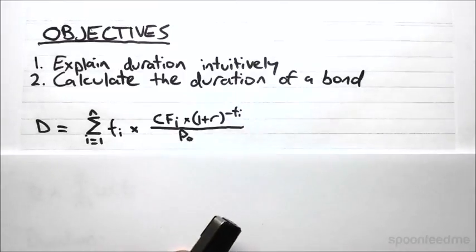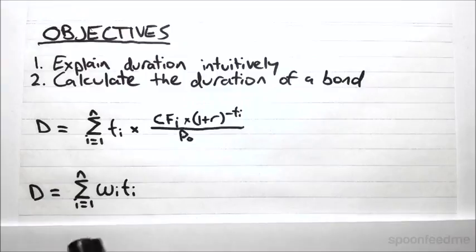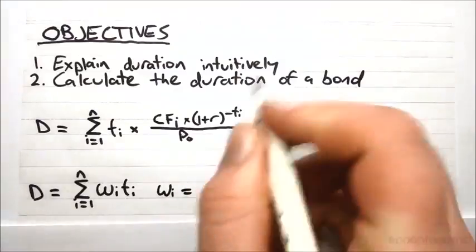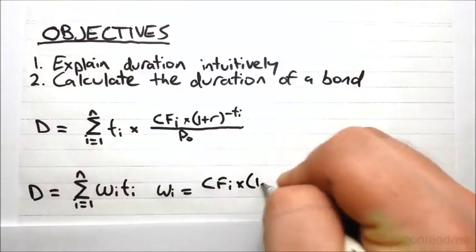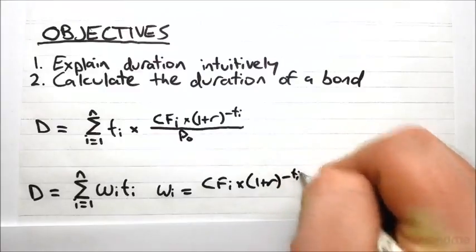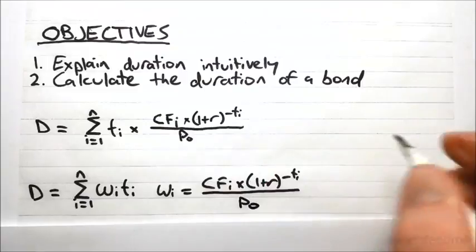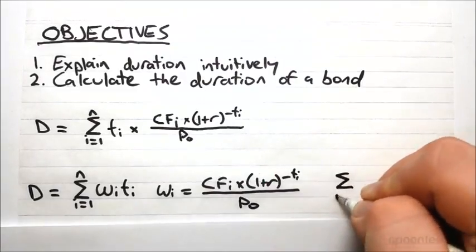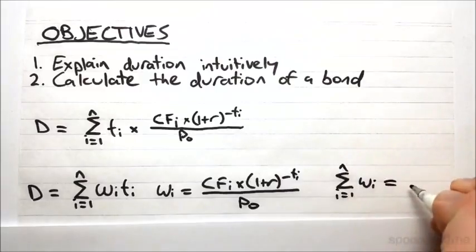So we can actually simplify this down to the following. So we just say it's the sum of wi times ti, where wi is simply equal to the discounted cash flow divided by the price. And we can see that if we take the sum of all of these w's, then they will actually be equal to one.